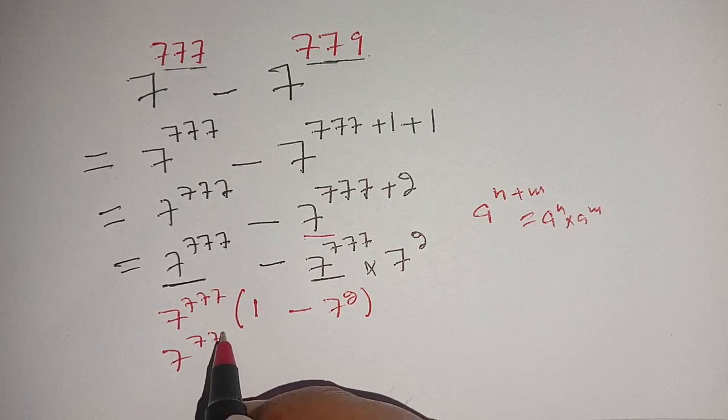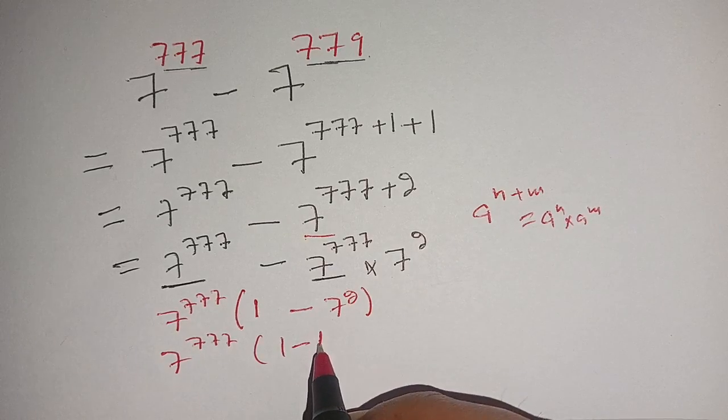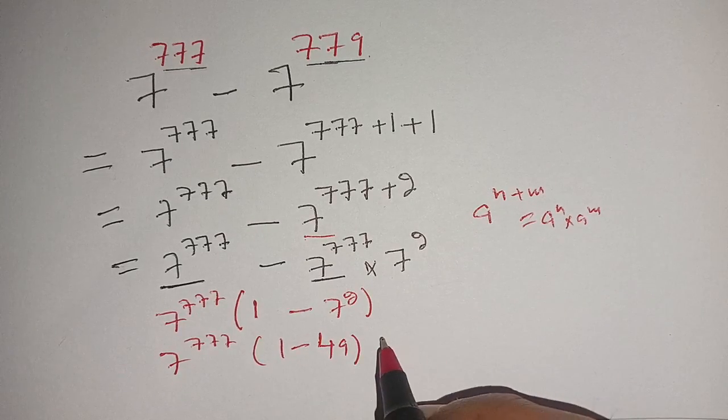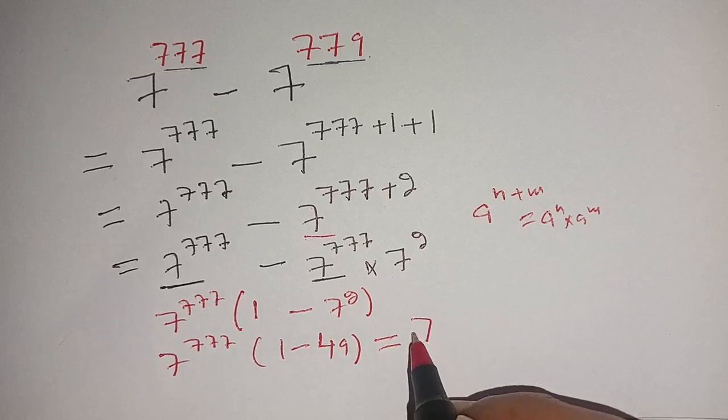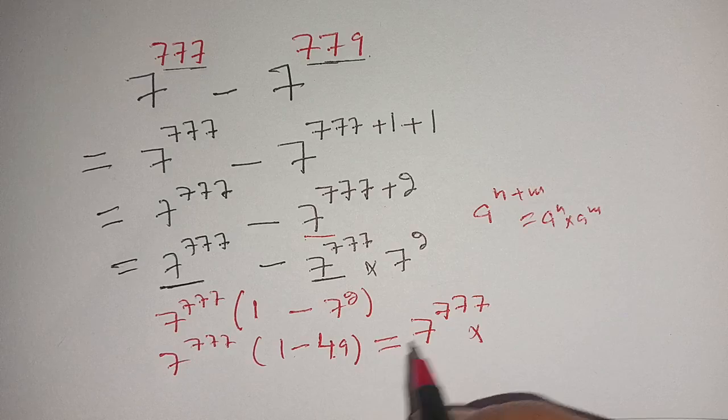Now we get 7^777 times (1 minus 49). So we have 7^777 times negative 48.